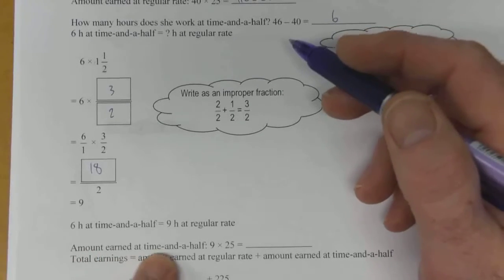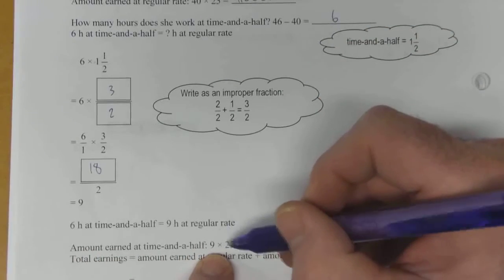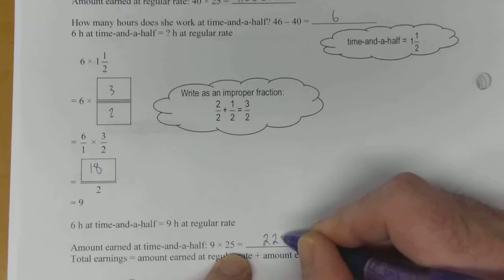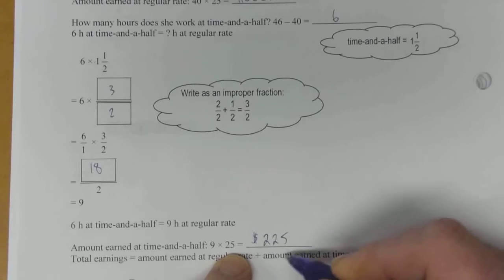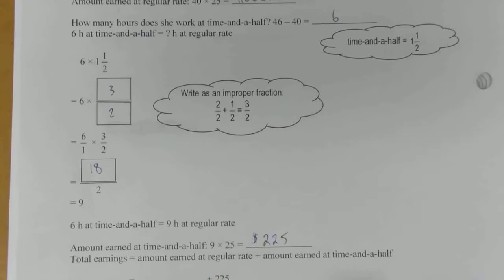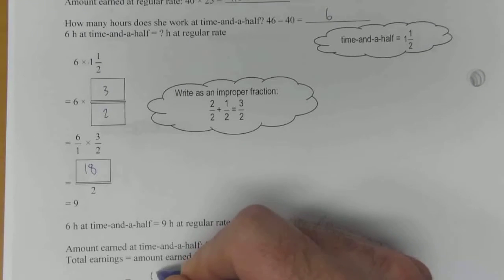So amount earned at time and a half is nine times 25, so that's $225. So her total earnings overall for the 46 hours, for the first 40, at the regular rate, it was $1,000.